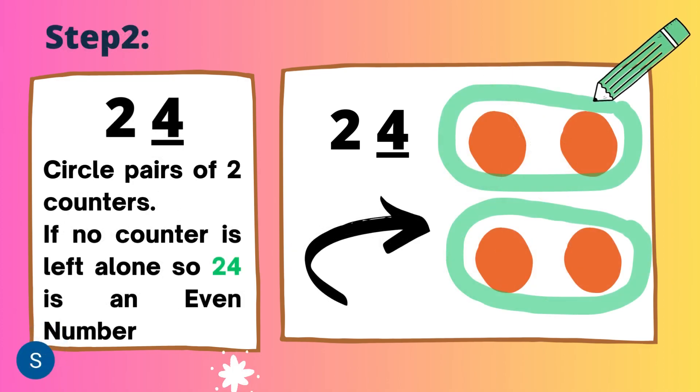Step 2 is to pair up the counters and make rings or loops. If no counter is left alone, then this number, which is 24, is an even number. You can see we have made 2 rings, but there is no counter left alone, so 24 is an even number.